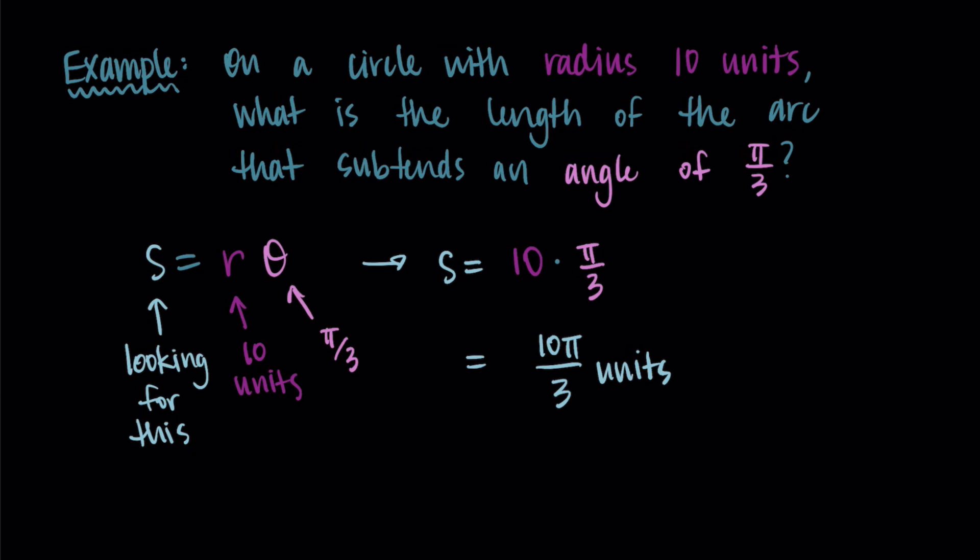Now, that number might not mean much to you seeing 10 pi over three. So I sometimes like to type it in my calculator just to get a decimal answer. So I'm getting 10.47 units as my arc length. And there we go, that is our final answer.